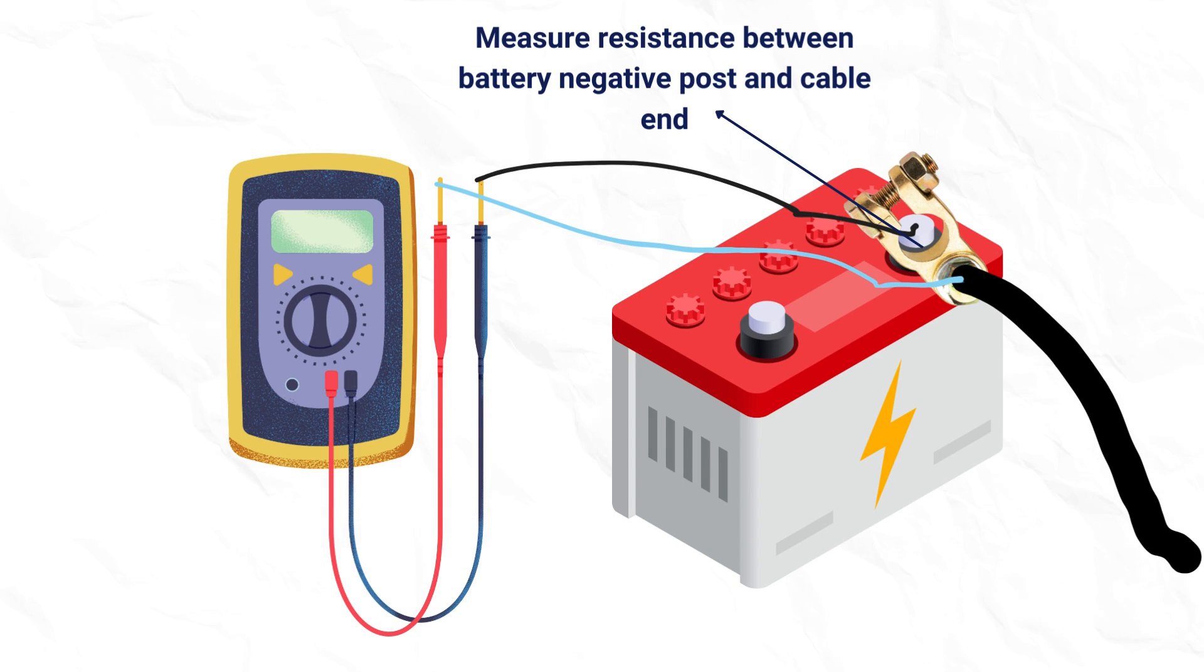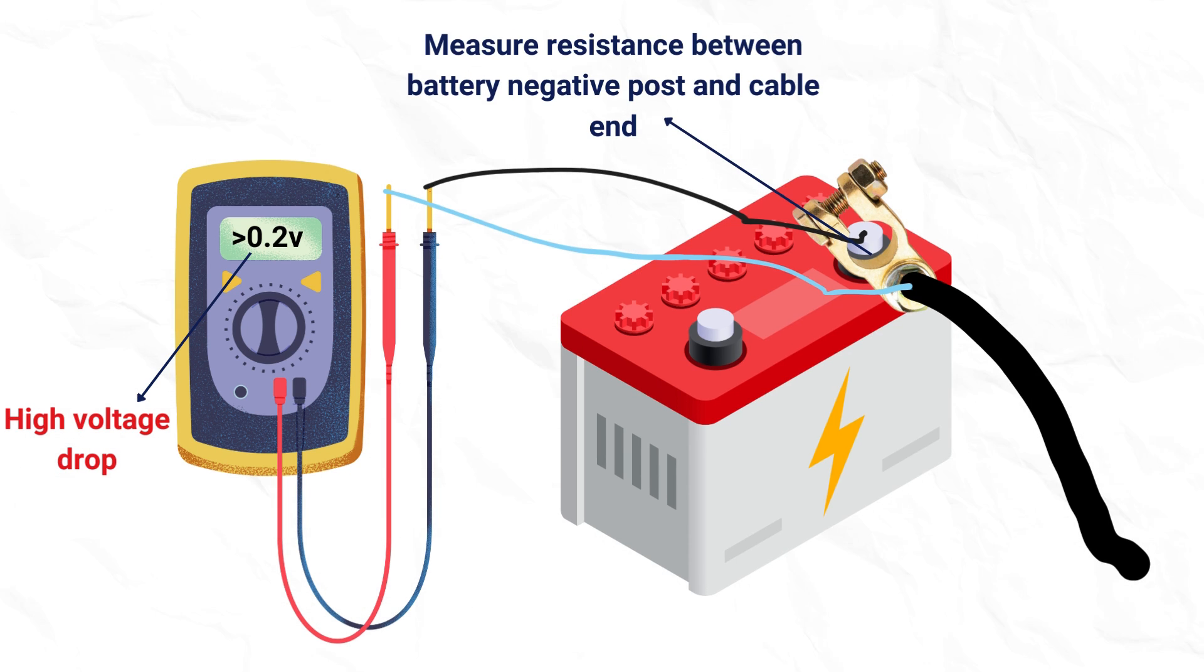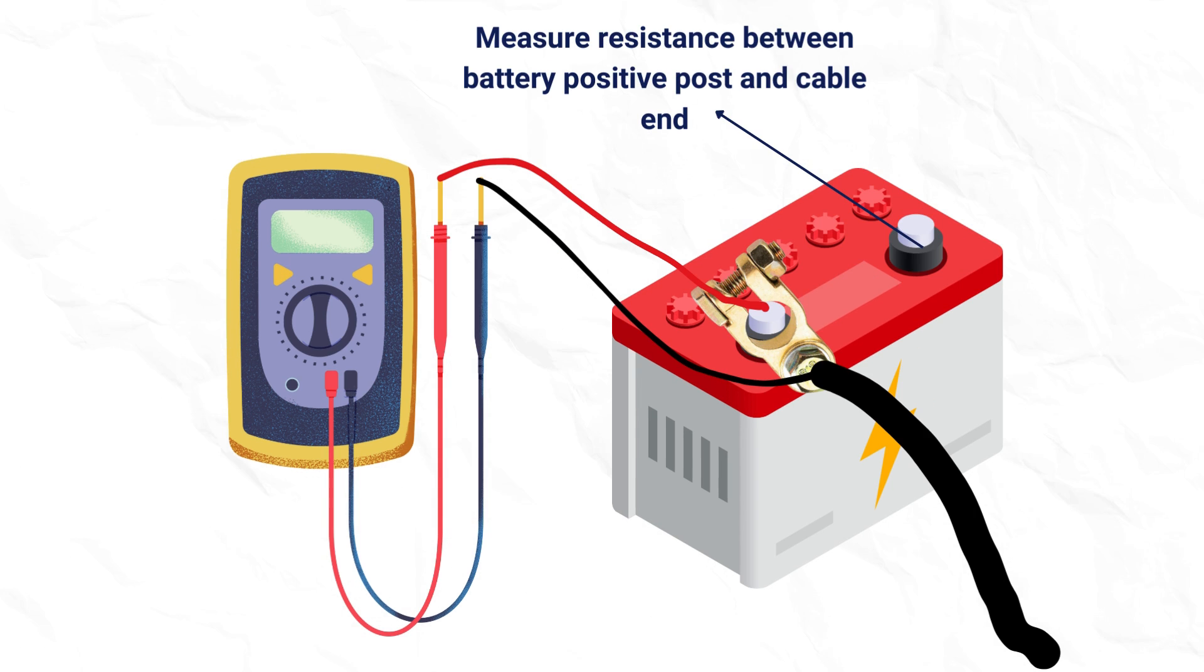Also, using a multimeter, measure the resistance between the negative battery post and the cable end. Voltage higher than 0.2 volts means that the battery has corroded terminals or loose connection. Repeat the same process for the positive battery terminal.